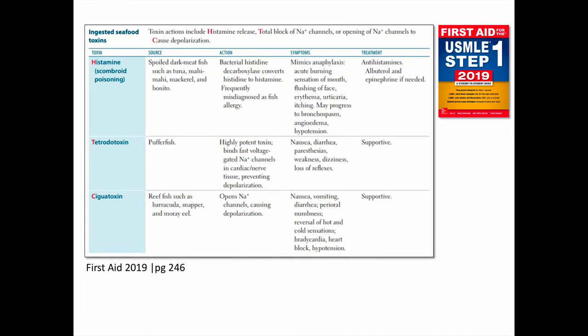This material corresponds to a table about ingested seafood toxins that can be found in the 2019 edition of First Aid on page 246. This table uses an HTC mnemonic device that actually seems pretty weak or unmemorable to me. In HTC, H stands for histamine as seen in scombroid fish poisoning, T is for total block of voltage-gated sodium channels and also for tetrodotoxin, and C is for causing depolarization and for ciguatoxin. That seems awfully contrived to me — THC would work a lot better since it immediately makes me think of another kind of intoxication.